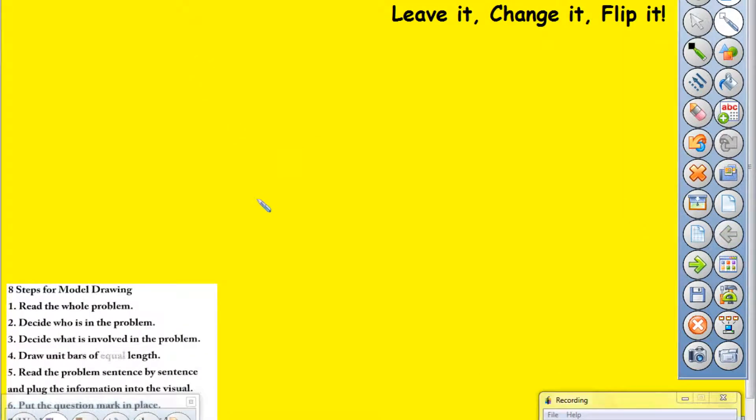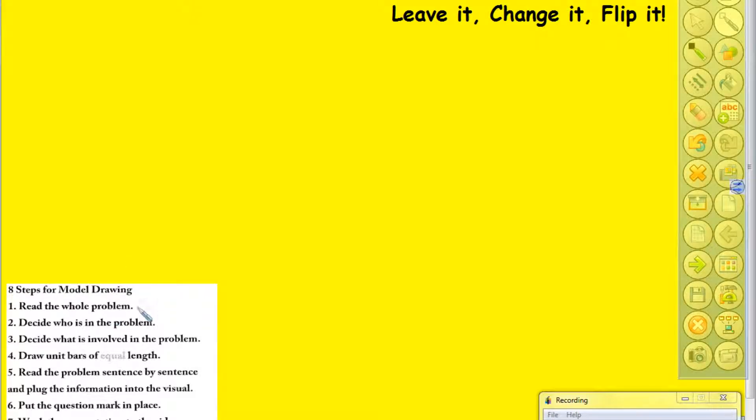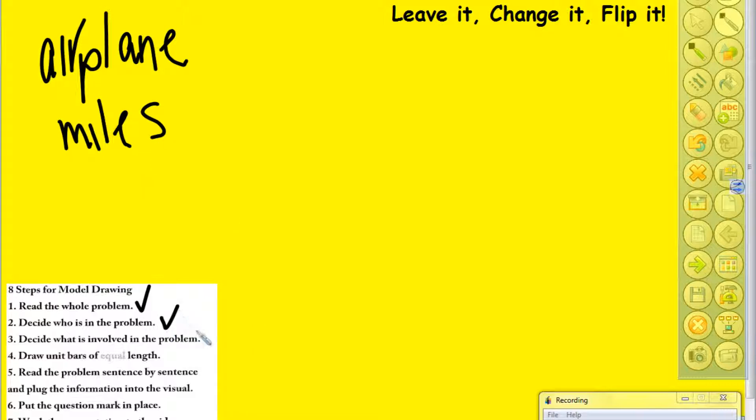Okay. So that's the first way that we can do it. But we can also do it using our 8 steps for model drawing. First we're going to read the entire problem which we've already done that. So I'm not going to do it again. And then we're going to decide who is involved in the problem. Which since we don't have a human or a person, it's going to be airplane. And then our what is going to be our miles. Because that's what we are talking about. So we've done our who and our what.